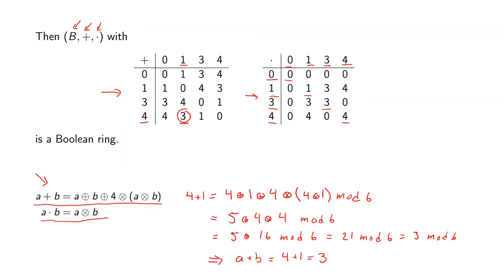You can do the rest yourself and verify that in the addition table we get exactly these numbers using our definition of addition. You can also verify that this fulfills the definition of a boolean ring.